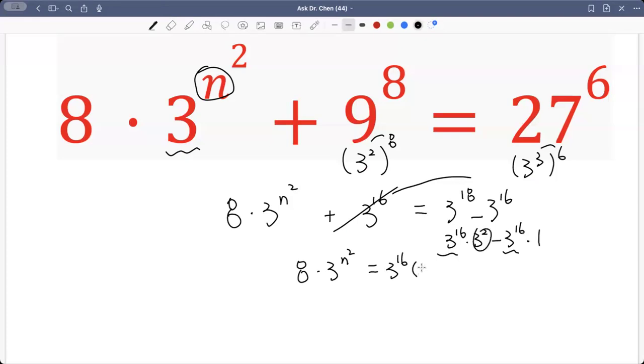Then we have 3 squared left for the first term and minus 1 for the second one. So 3 squared is 9. 9 minus 1, that's 8. So it's 8 multiplied by 3 raised by 16.